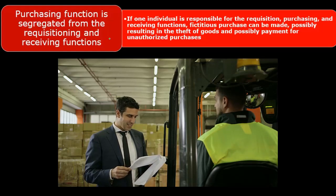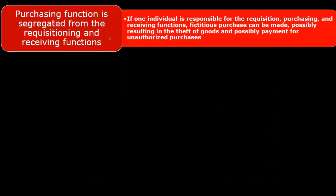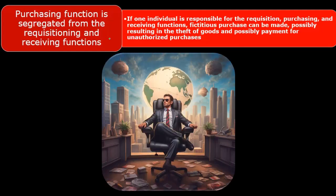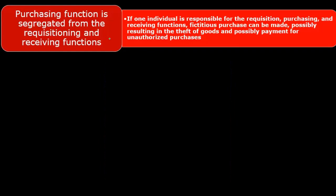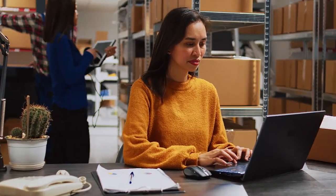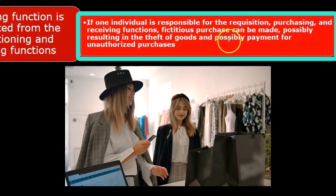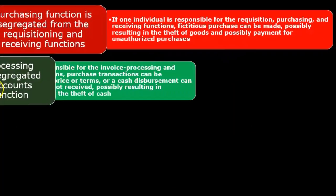In other words, especially as the company gets larger, we're more concerned because individuals are not possibly as closely knit, and therefore we need more internal controls to put safeguards in this process. You can imagine a person who could just requisition something, go through the purchasing process, and then receive the goods — all by the same individual — allowing them to make a fictitious purchase, possibly resulting in theft. They could basically approve something for themselves going through the company's purchasing process, resulting in payment for an unauthorized purchase. So we need the separation there.